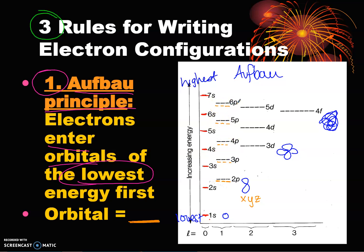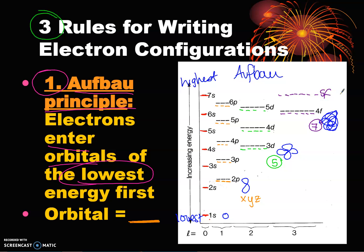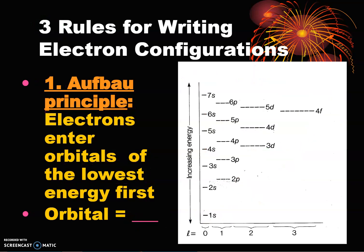We also have d orbitals — remember there are five types of d orbitals — so you'll see five lines. Then lastly we have seven types of f orbitals, so there are seven orbitals listed, and then there would be a 5f up above, and so on. We use these lines to represent the complicated shapes to simplify the whole thing.